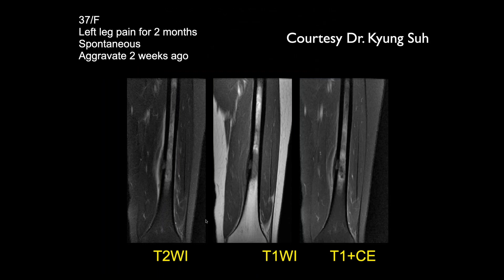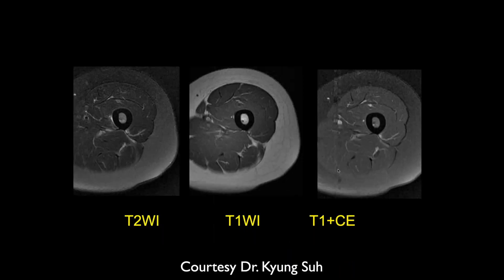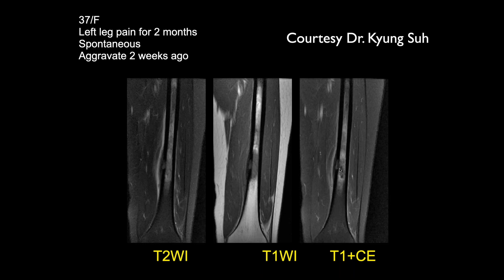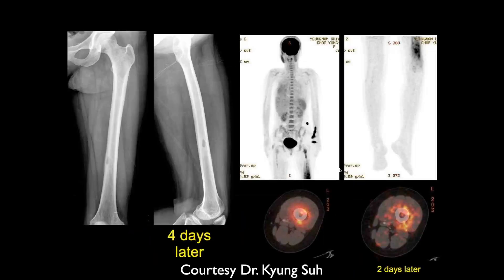This is a 37-year-old female with left-leg pain for two months. It was spontaneous and was aggravated two weeks ago. You can see periosteal reaction and line thickening, and some moderate bone marrow edema adjacent to that and slightly more proximal, extending upwards. There's also maybe a small focus of contrast enhancement of the edema. It looks like it's in the cortex — you can see cortical problems and cortical thickening.